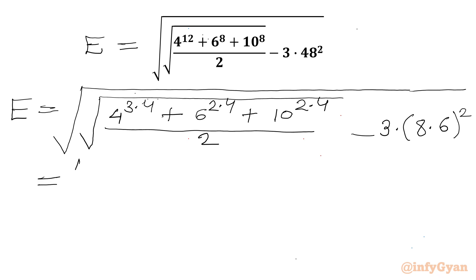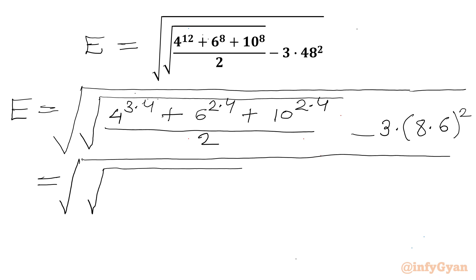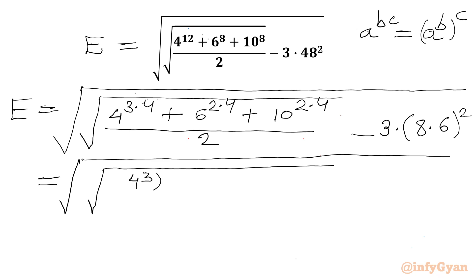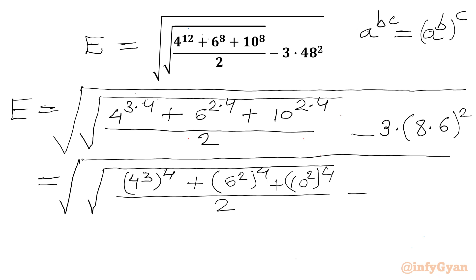This will be equal to the square root of: using the rule that a to the power (b×c) can be written as (a^b) whole power c, we write 4 cubed whole power 4, plus 6 squared whole power 4, plus 10 squared whole power 4, over 2, minus 3 times 8 squared times 6 squared.